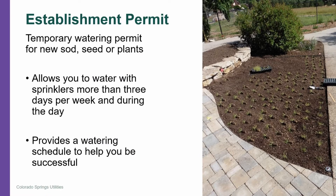What is an establishment permit? An establishment permit is a temporary watering permit for new sod, seed, or plants. It allows you to water with sprinklers more than three days per week and during the middle of the day. With the WaterWise rules, you are not allowed to water more than three days per week, and watering with a sprinkler system is prohibited from the hours of 10am to 6pm. So the establishment permit allows you a variance for those two WaterWise rules.